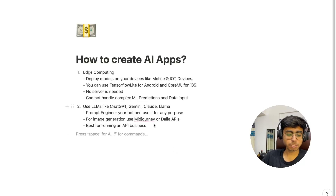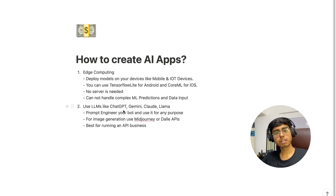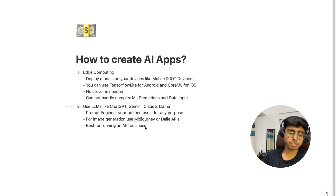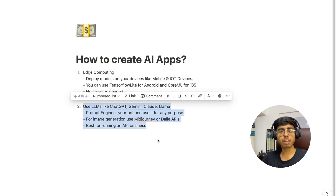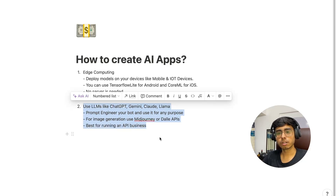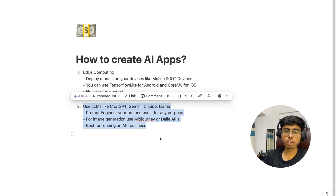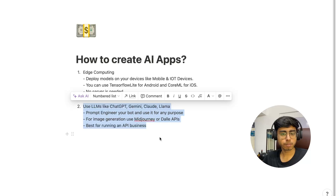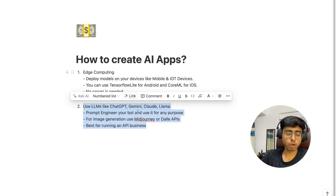LLMs are the best for running API businesses because currently the cost of these APIs is very low — you're charged per token. Many companies have been built around this. For example, a company where you type 'create a picture of me sitting on a bench' and they give you that image — at the back, they are using these LLM API companies themselves, maybe DALL-E, or Claude APIs, or Gemini APIs.